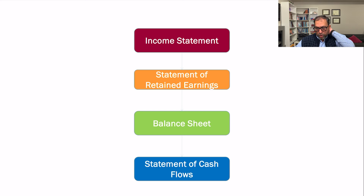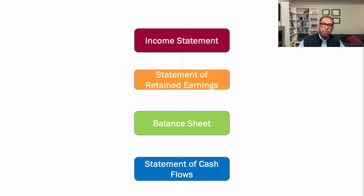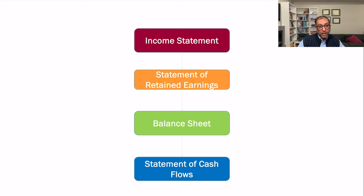When presenting financial statements, we follow a specific sequence: income statement, statement of retained earnings, balance sheet, and then the statement of cash flows. This sequence is important because to prepare the statement of retained earnings, we need to know net income, and net income can only be determined from the income statement — so the income statement is prepared first.